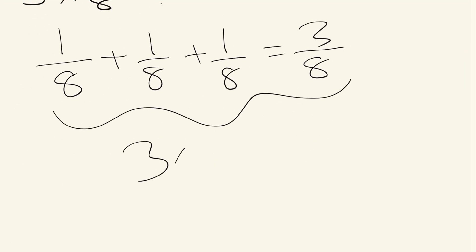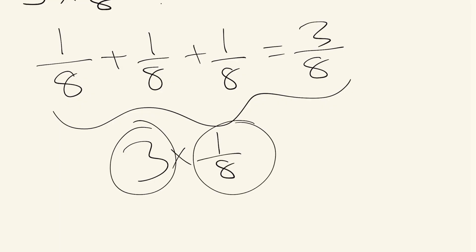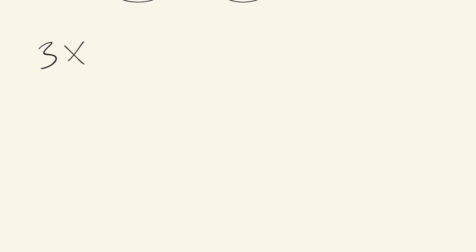This means that three times one eighth equals three groups of one eighth. There is another way to do this, and it's actually simpler. Our original equation was three times one eighth. Another way is multiplying the numerator by the other numerator and the denominator by the other denominator. A whole number doesn't appear to have a denominator, but whole numbers do have a denominator — it's one.